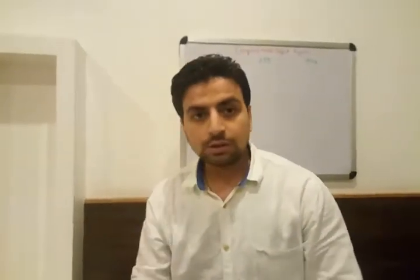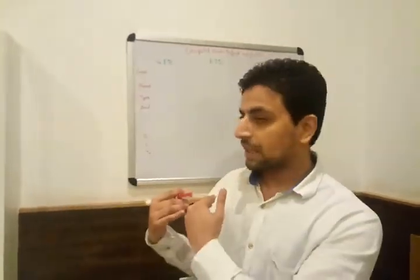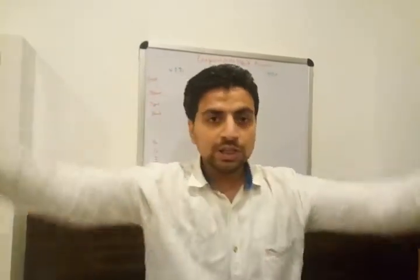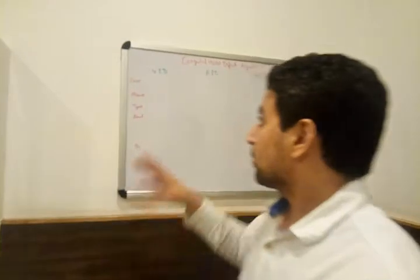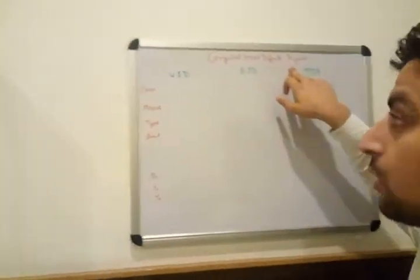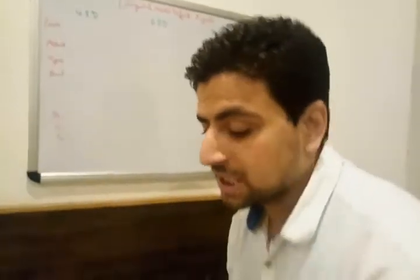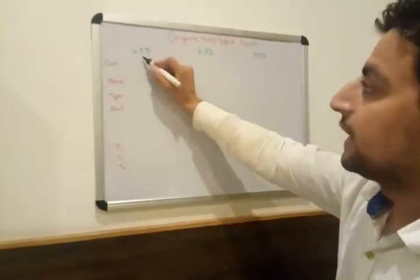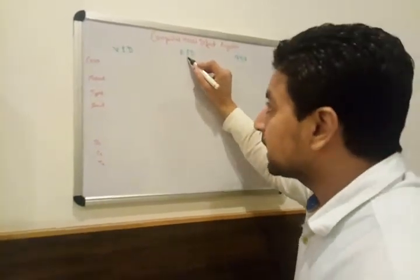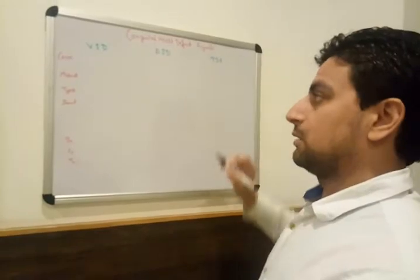Good evening doctors. I already teach about fetal circulation and now this is my next video about congenital heart defects. Today we are going to discuss acyanotic congenital heart defects — cyanotic ones will be covered in the next session. VSD is ventricular septal defect, ASD is atrial septal defect, and PDA is patent ductus arteriosus.